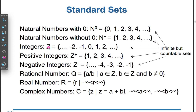Integers: Z = {..., -2, -1, 0, 1, 2, ...}. Positive integers: Z+ = {1, 2, 3, 4, ...}. Negative integers: Z- = {..., -4, -3, -2, -1}.